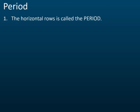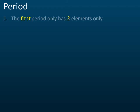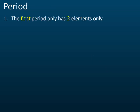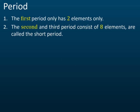The horizontal row in the periodic table is called the period, and there are seven periods. The first period has two elements: hydrogen and helium. The second and third periods each have eight elements, and these are called short periods.